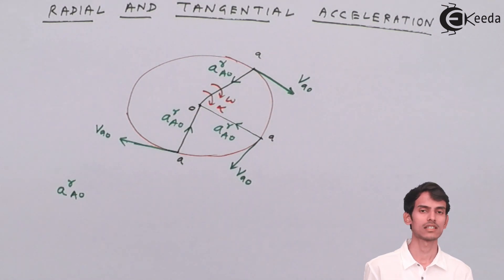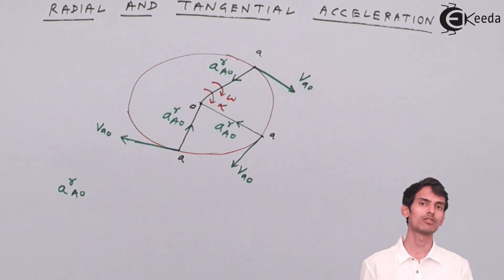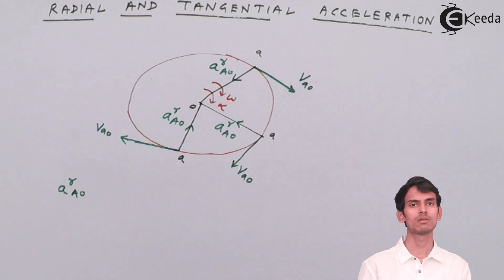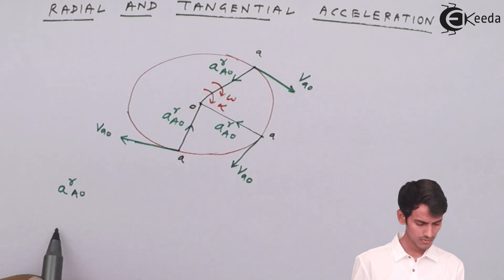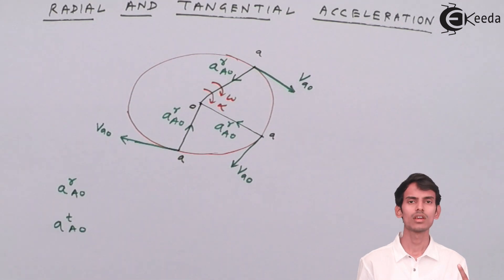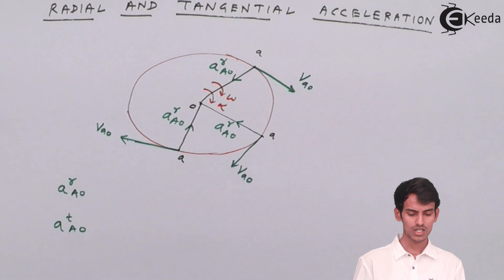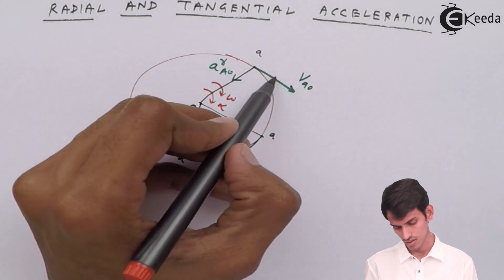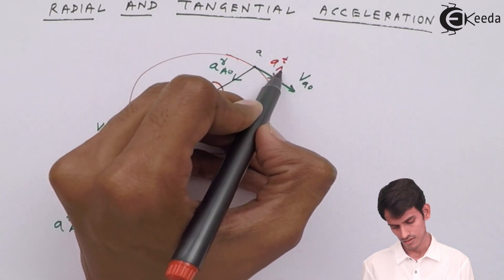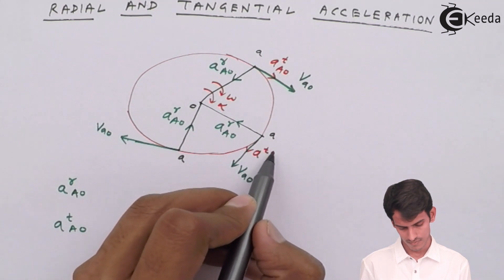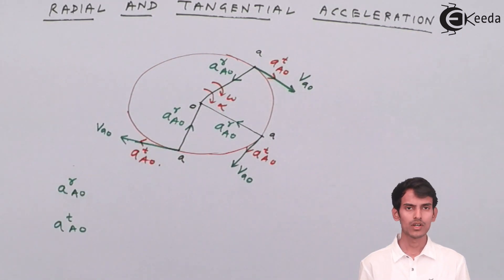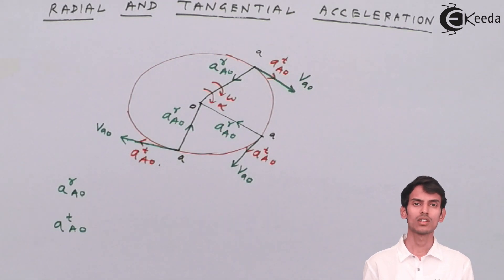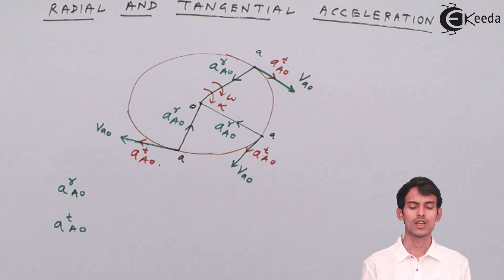Since the link has angular acceleration, the magnitude of velocity will also change. The magnitude changes because of tangential acceleration. The tangential component of acceleration helps to change the magnitude of velocity. The direction of tangential acceleration is always perpendicular to the link — or equivalently, it is along the direction of velocity. It is denoted as A^T_AO, tangential acceleration of link AO.